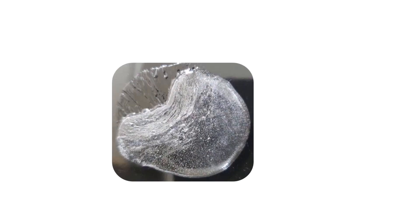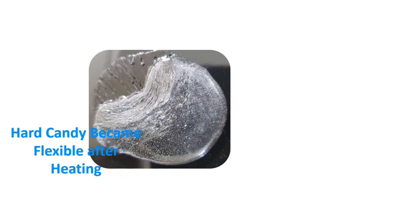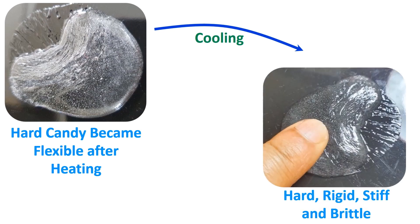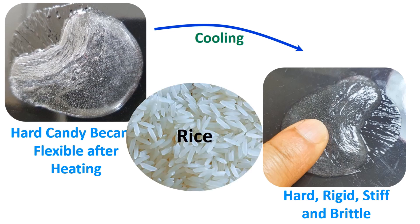A glass transition is observed when an amorphous material turns from a ductile or flexible state to a hard, rigid, stiff, and brittle state. At this transition, the solid glassy state is changed to a viscoelastic rubber state. At this temperature, the free volume or the gap between the molecular chains increases by 2.5 times. After cooling, it is then transformed back to hard, rigid, stiff, and brittle. Pure crystalline material does not have a glass transition — it is only applicable to amorphous materials. Semi-crystalline materials such as rice, composed of amorphous and crystalline components, can therefore have both a glass transition temperature and a melting temperature.